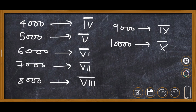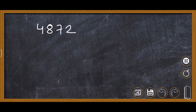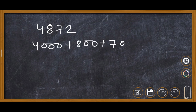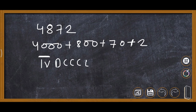Let us take an example: write 4872 in Roman numerals. First, write it in expanded form. 4000 is written as IV with a bar on top. 800 is written as DCCC. 70 is written as LXX. 2 is written as II. Combining all parts gives the Roman numeral for 4872.